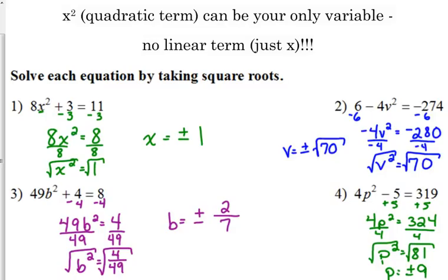So, a couple of things. Quadratic term is the only thing that can be there. And no linear term. You take the square root. Don't forget the plus or minus. If it's not a perfect square, just leave it under the square root. If you're taking the square root of a fraction, and those are perfect squares, you can take the square root of both pieces. And that's about it.